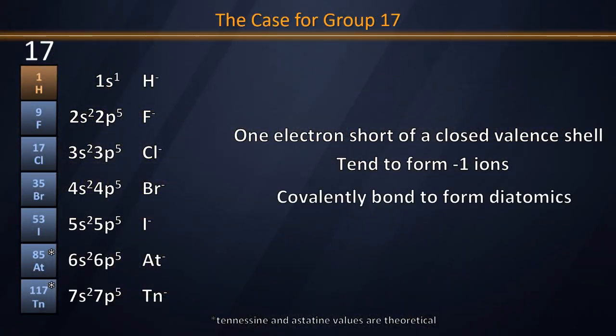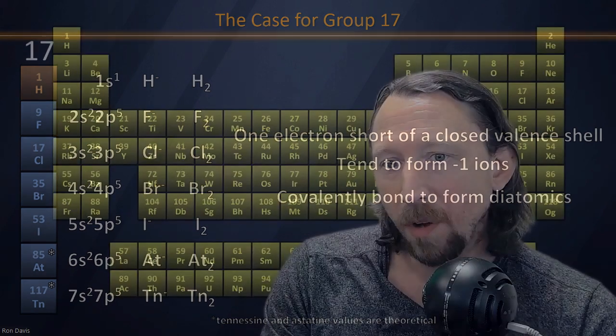And maybe more importantly than that, they covalently bond to form diatomic elements. We tend to see H2, F2, Cl2, Br2. These are forming small discrete molecules that are covalently bonded with two atoms per molecule, quite a similarity.